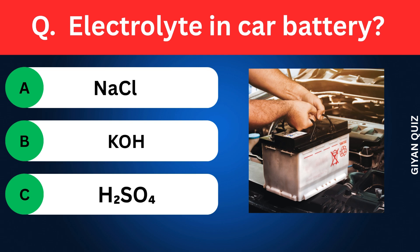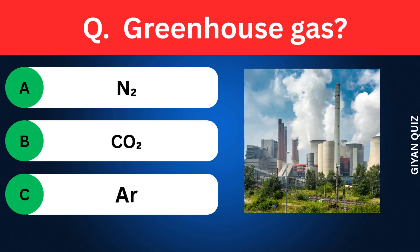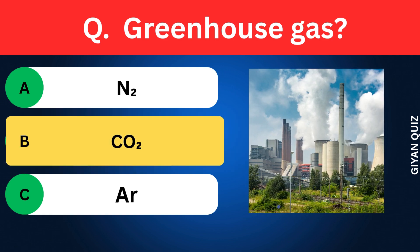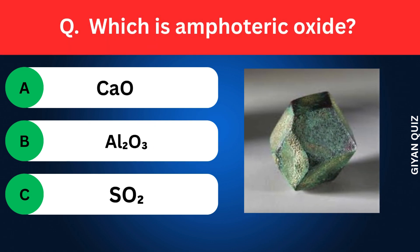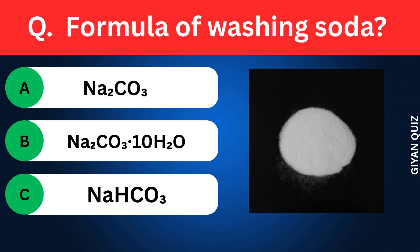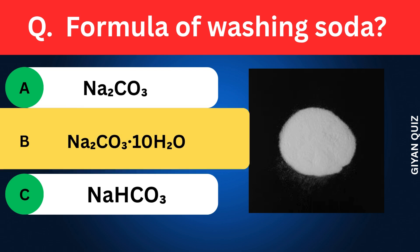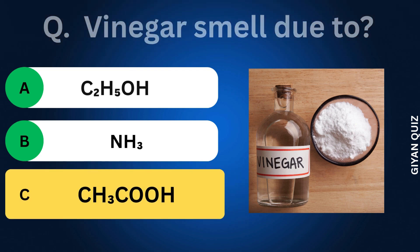Electrolyte in car battery? Options: Sodium chloride, Sulfuric acid. Correct answer: sulfuric acid. Formula of washing soda? Options: Sodium carbonate, Sodium carbonate decahydrate (Na₂CO₃·10H₂O), Sodium bicarbonate. Correct answer: sodium carbonate decahydrate. Vinegar smell is due to? Options: Ethyl alcohol, Ammonia, Acetic acid or ethanoic acid. Correct answer: acetic acid or ethanoic acid.